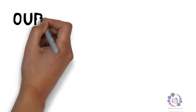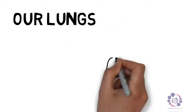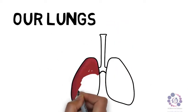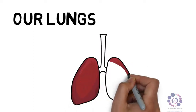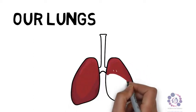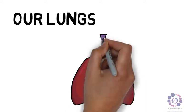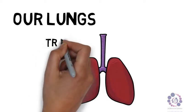First of all, let's have a look at our lungs. Our lungs are supplied with air by our windpipe - the tube that goes from our throat down to our lung, the main pipe. This is called the trachea.